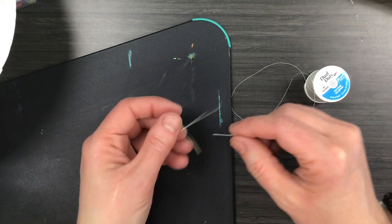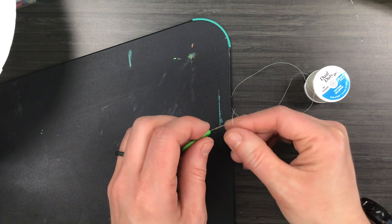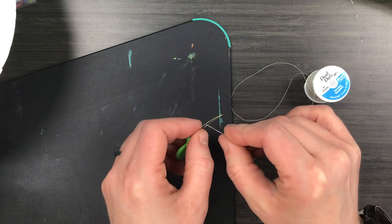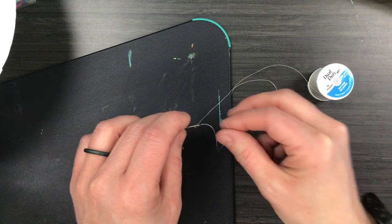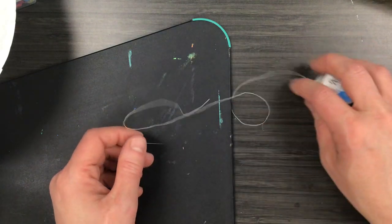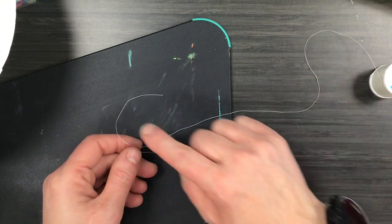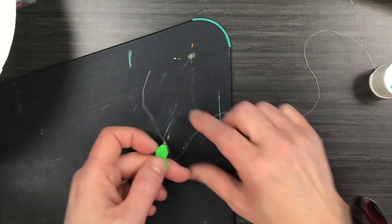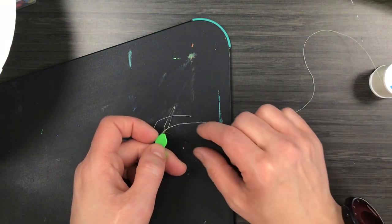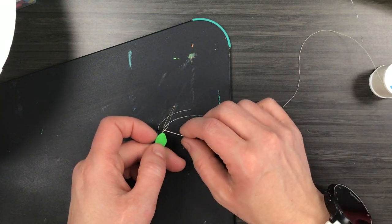Then I'm going to put my thread through my needle threader and I'm going to pull just a little tail. It's not long, just a little bit. Then I need to take my needle off my needle threader.